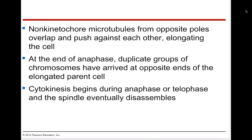Non-kinetochore microtubules from opposite sides of the elongated cell help to elongate the cell. At the end of anaphase, after sister chromatids have been pulled apart, duplicate groups of chromosomes have arrived at opposite ends of the elongated cell. Moving into telophase, those two nuclei we talked about will start to develop within the same cell, and the spindle apparatus starts to disassemble as the nuclei restructure — because they're not needed anymore.